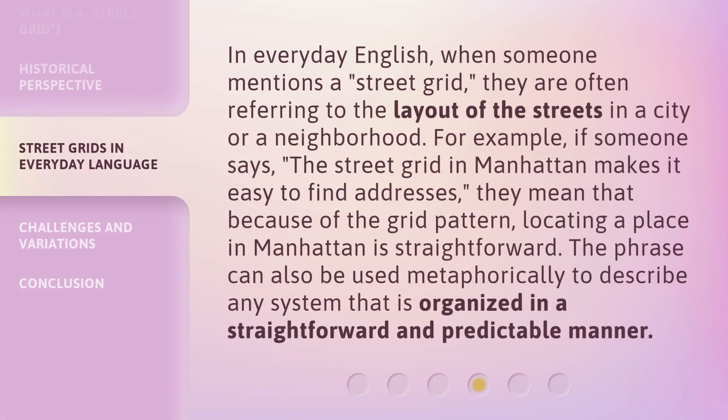In everyday English, when someone mentions a street grid, they are often referring to the layout of the streets in a city or a neighborhood. For example, if someone says, 'The street grid in Manhattan makes it easy to find addresses,' they mean that because of the grid pattern, locating a place in Manhattan is straightforward. The phrase can also be used metaphorically to describe any system that is organized in a straightforward and predictable manner.